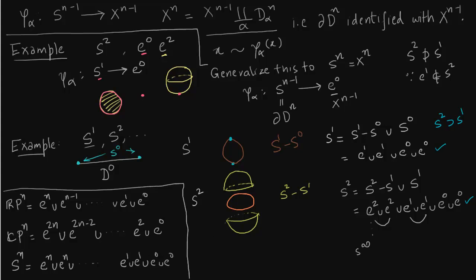So S^n is 2n cells then 2(n-1) cells so on to 2 1-cells and 2 0-cells. So let us identify the antipodal points. These two identified, these two, these two and this gives us RP^n.